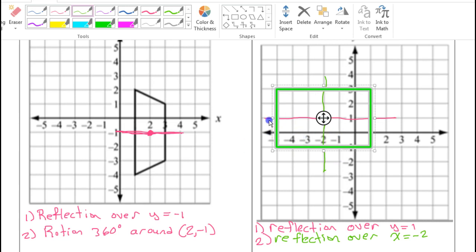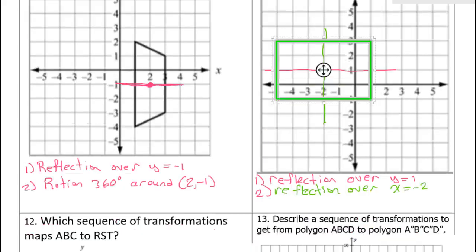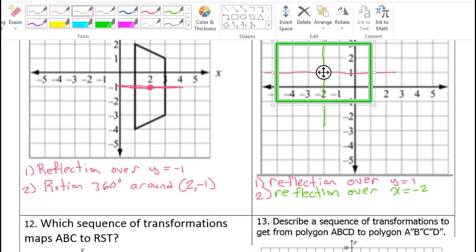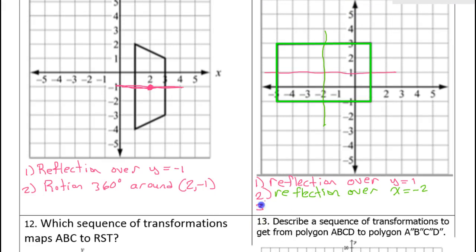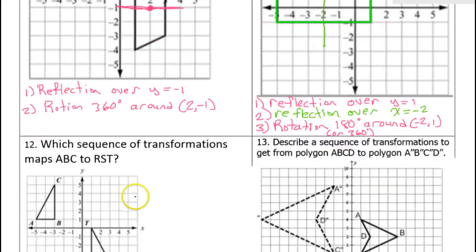Rotating 90 degrees twice like I just did is the same as rotating 180 degrees. So we could say rotation 180 degrees around—and the center point right here is negative 2 comma 1. And I'll just squeeze in or 360 degrees because 360 degree rotation will always take you back to where you started from. That was number 11, let's move on to number 12.